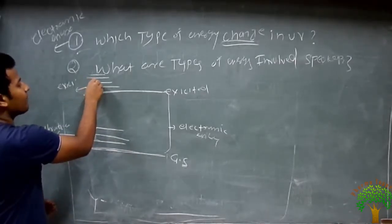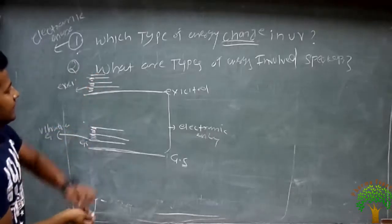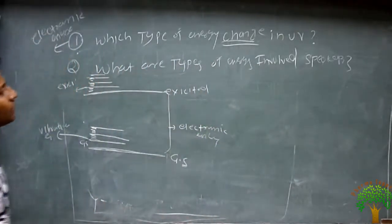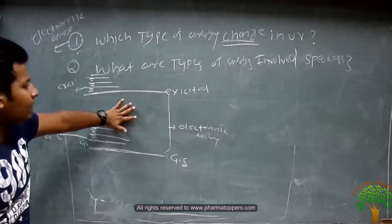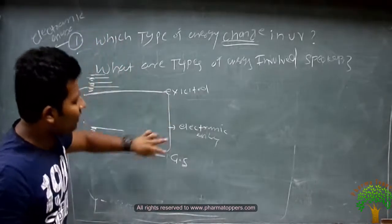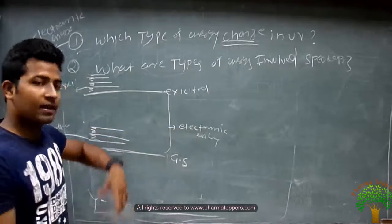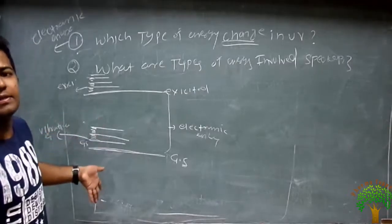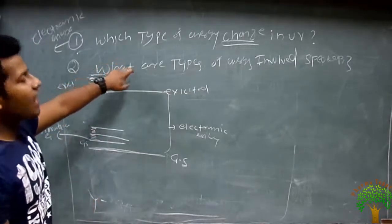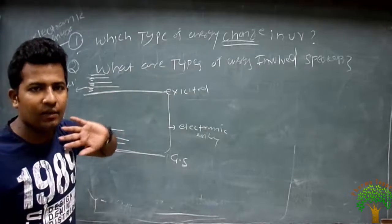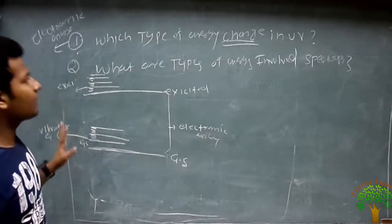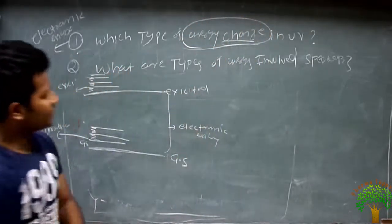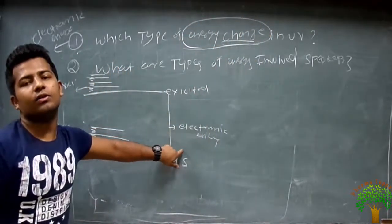Each vibrational energy contains the rotational energy level. That's why, what are the types of energy involved in UV spectroscopy? The answer is all of them. Because one electronic energy level contains all — that is, vibrational — and vibrational contains rotational. That's why the answer is all types of energy are involved in UV spectroscopy. But which energy changes? Energy change only happens in the electronic energy.